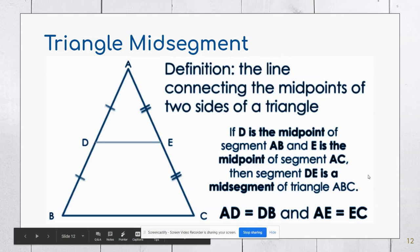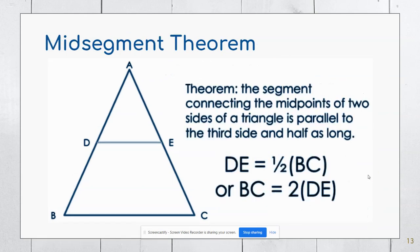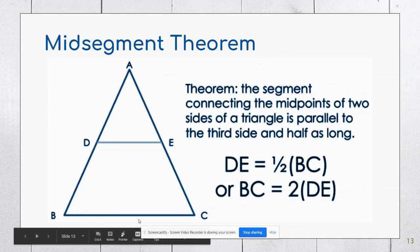There's something special about the mid-segment. You'll see here that the mid-segment is half of this large segment at the bottom. So if I wanted to figure out what BC was, it would be 2 of line DE.